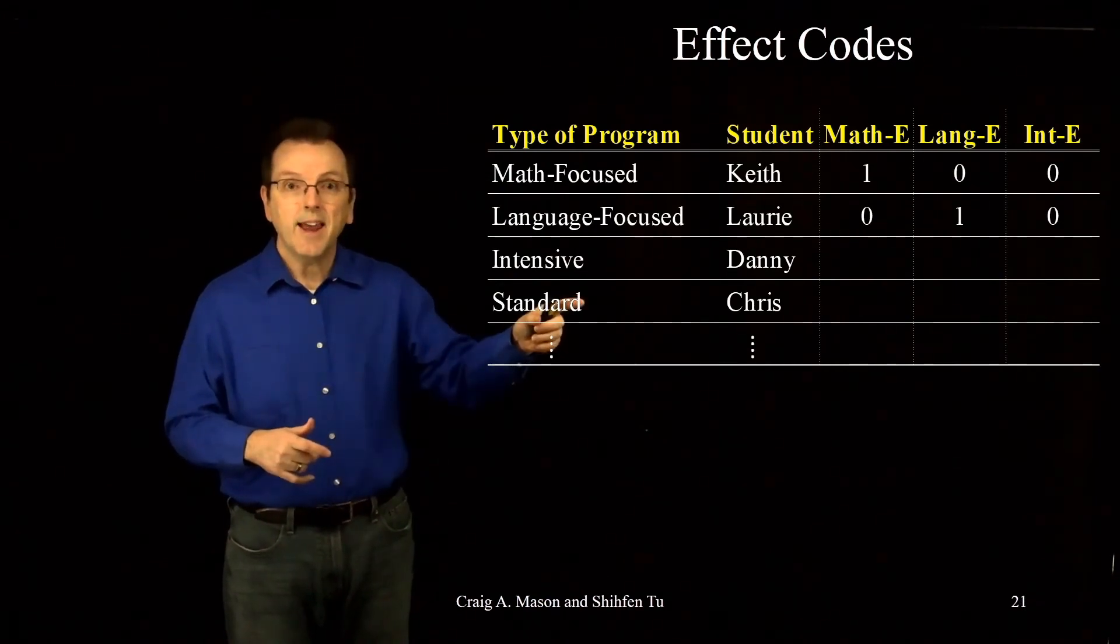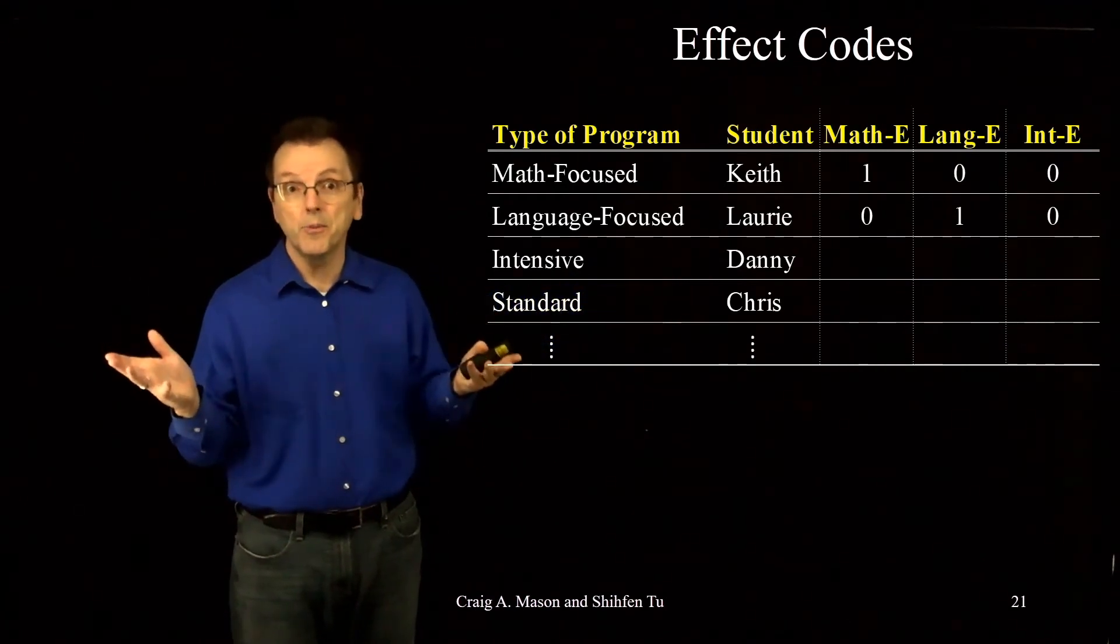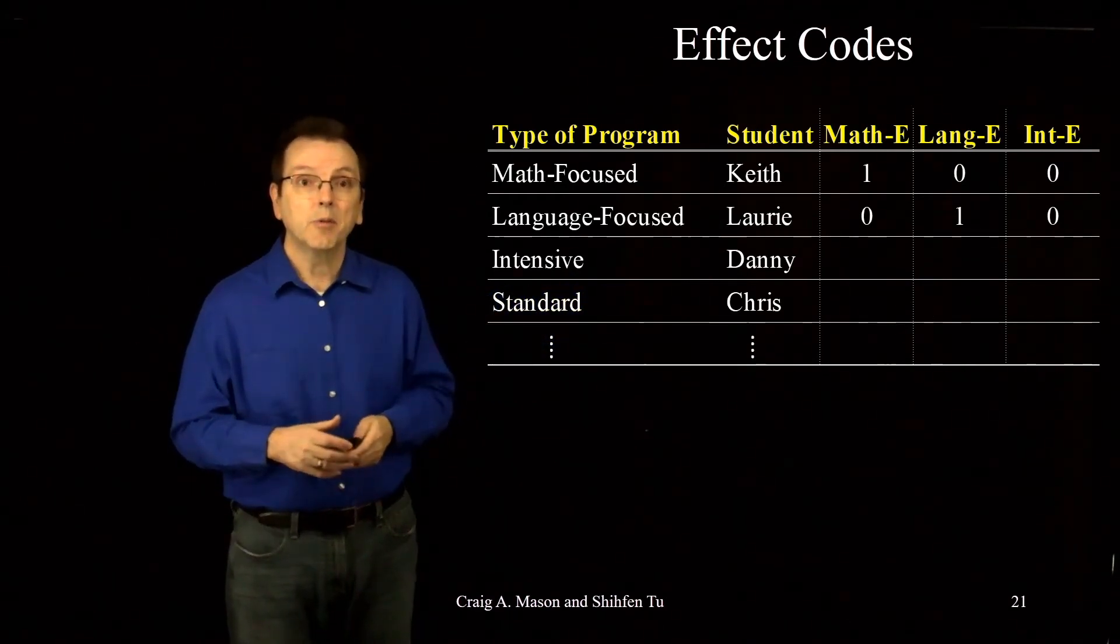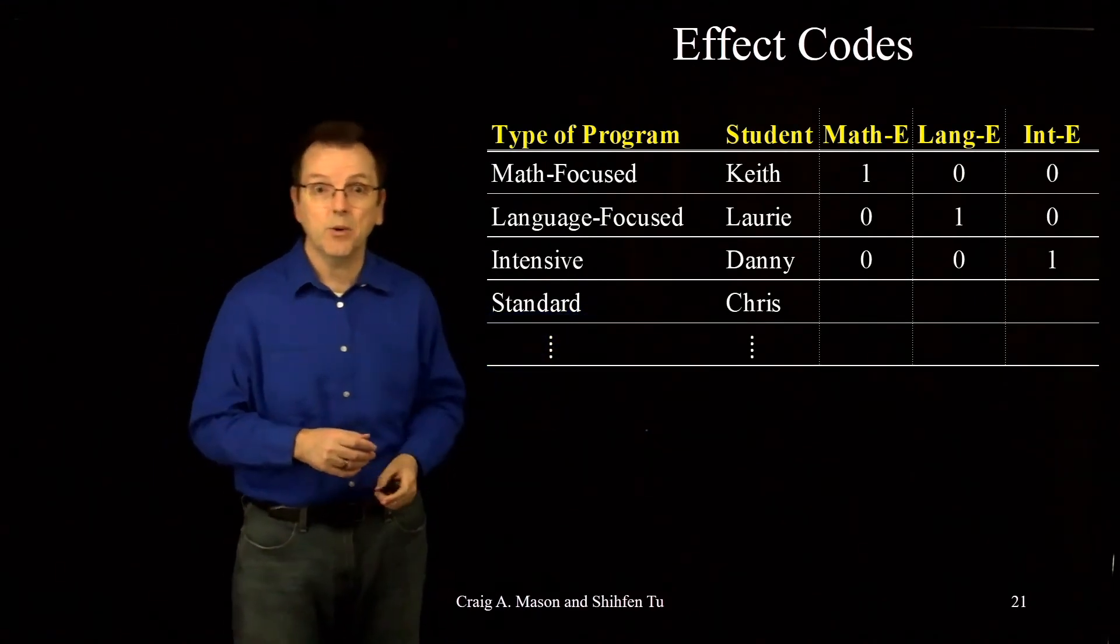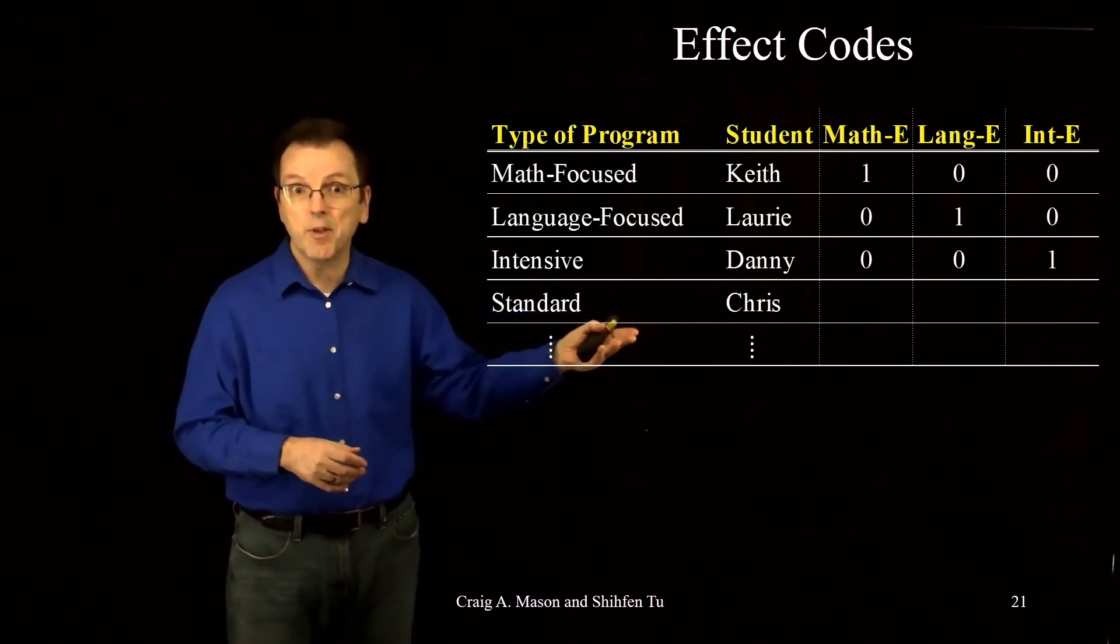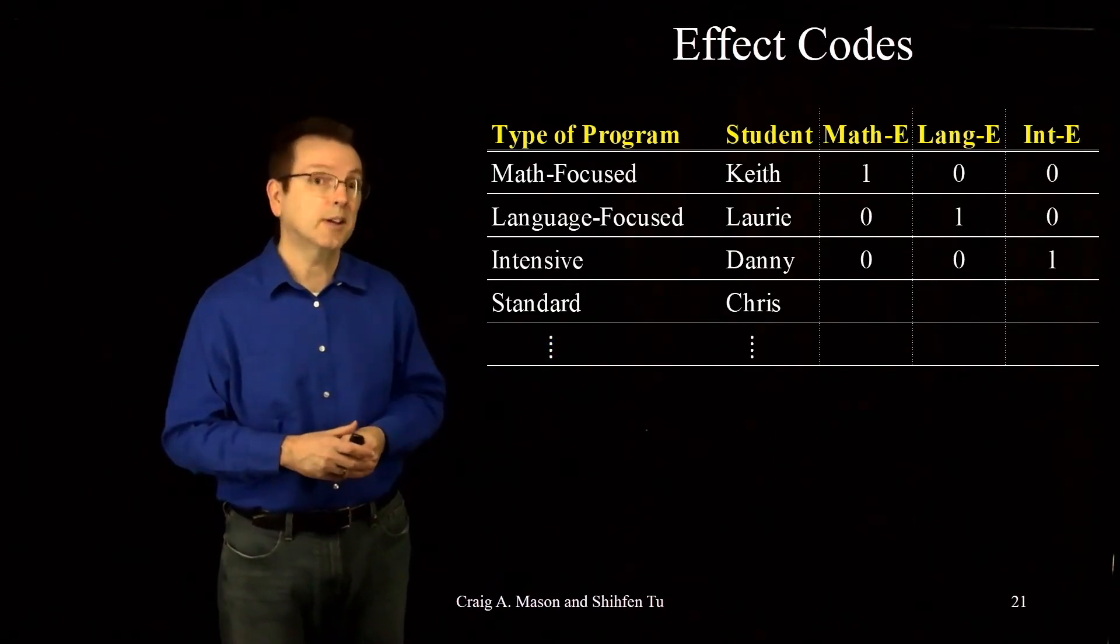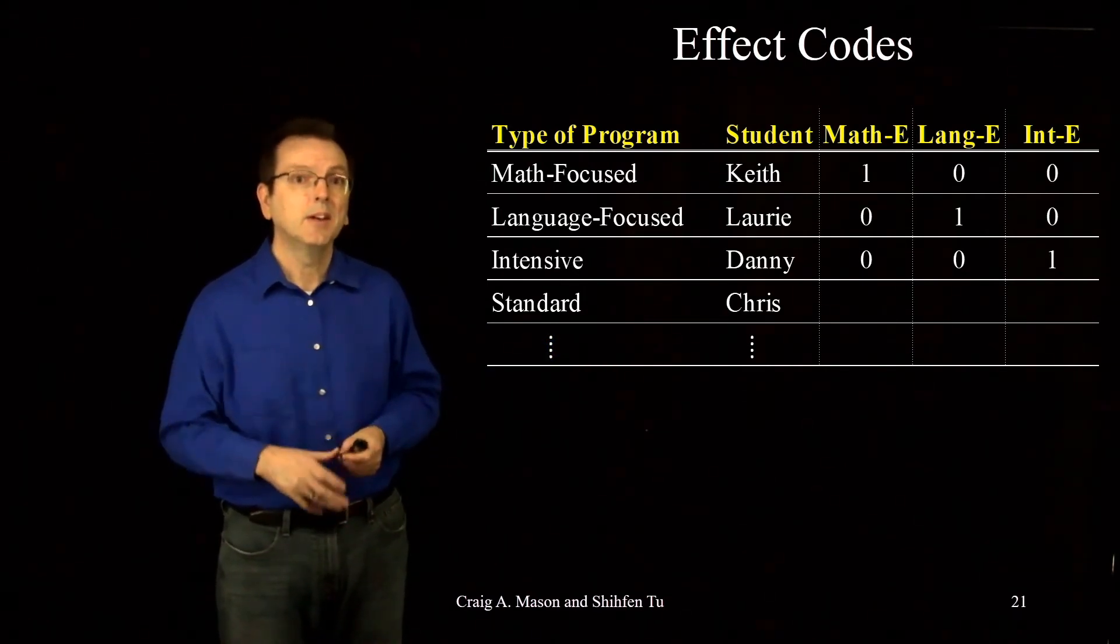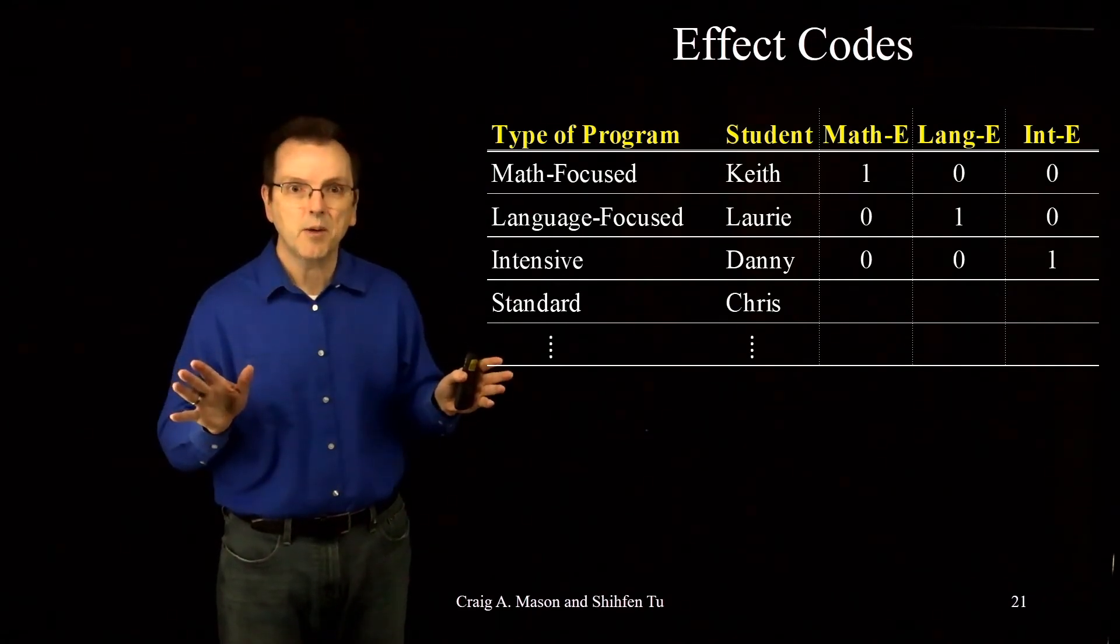Then we have Danny. Danny is in the intensive curriculum, which is also one of our three effect codes. So he would be a one for the intensive curriculum effect code and a zero for the math curriculum effect code and a zero for the language curriculum effect code. So far, so good. Just like what we saw with dummy coding.